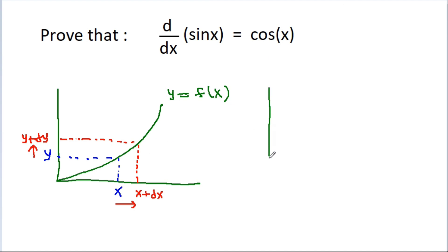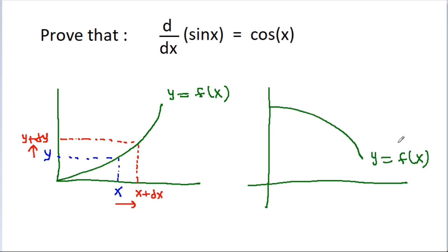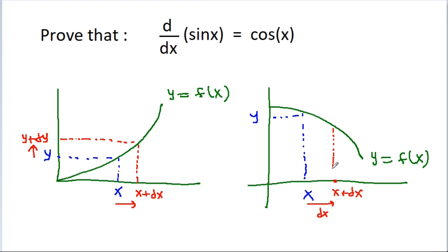Note that dy may be negative also if we have a decreasing function. Suppose we have any decreasing function — at any point x, the value of y is y, and if we increase x by dx, then x becomes x plus dx and y changes by some dy, becoming y plus dy, where dy is negative.